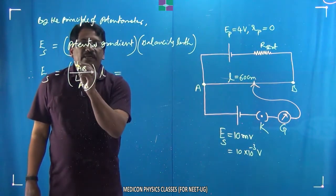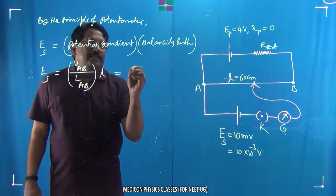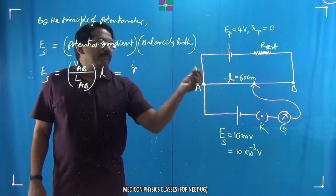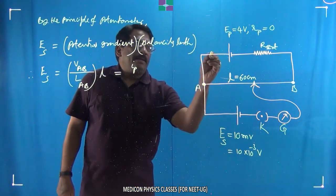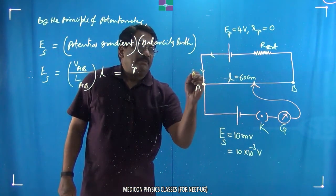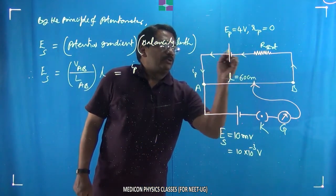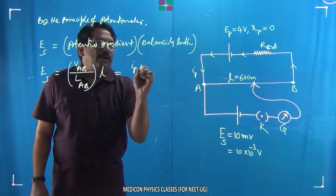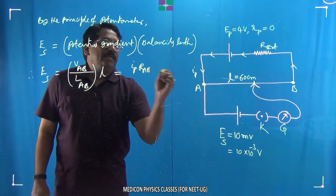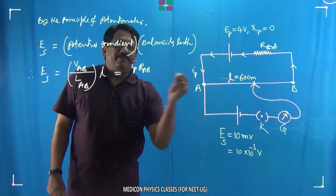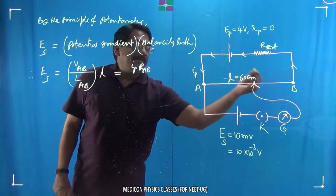This equals V_AB, which we can write as I_primary times R_AB, because current I_primary passes through it. So I_primary into R of AB gives us V across AB, the potential difference